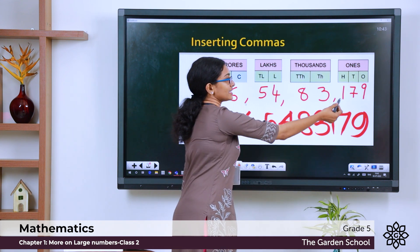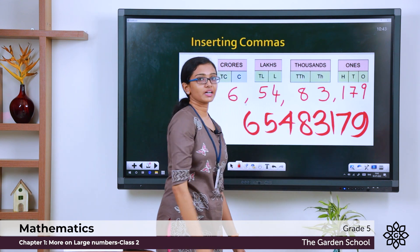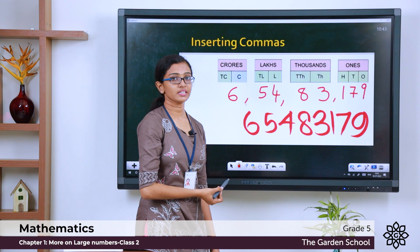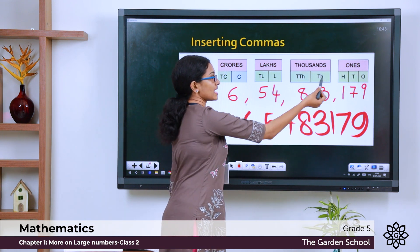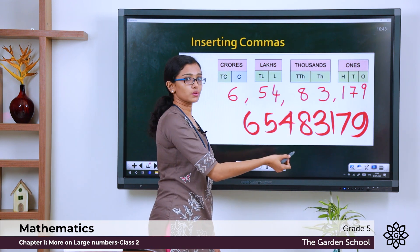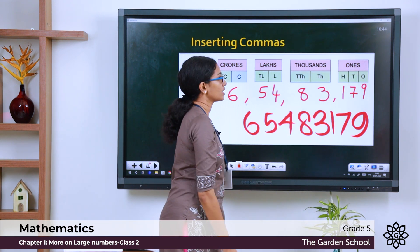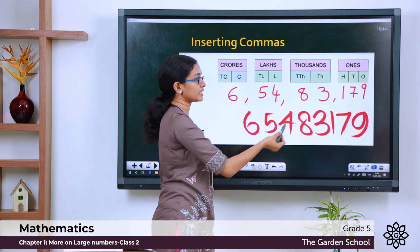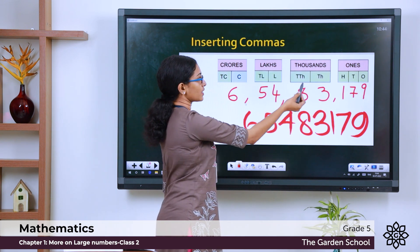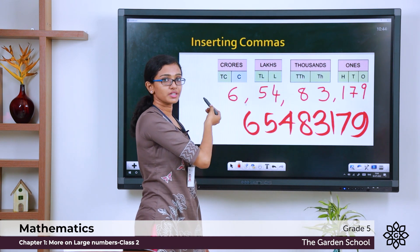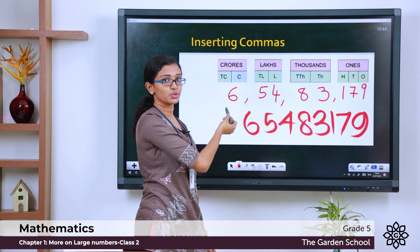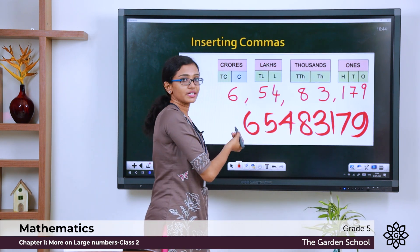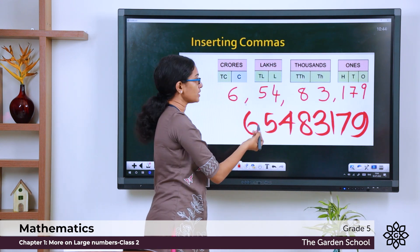So the digits that come under the same period are always read together and the name of the period is read alongside. In the 1s period alone, note that you have 3 places, and all the higher periods will have only 2 places each. So we have inserted commas in between.